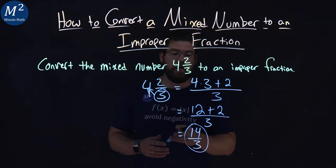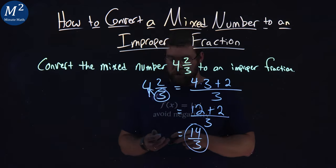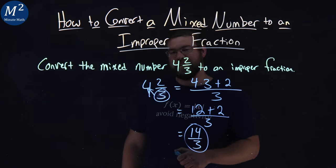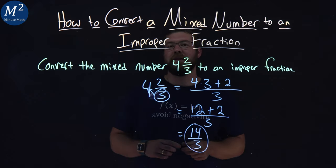And there we have it. We got our answer. Our mixed number of four and two-thirds was equal to our improper fraction, fourteen over three.